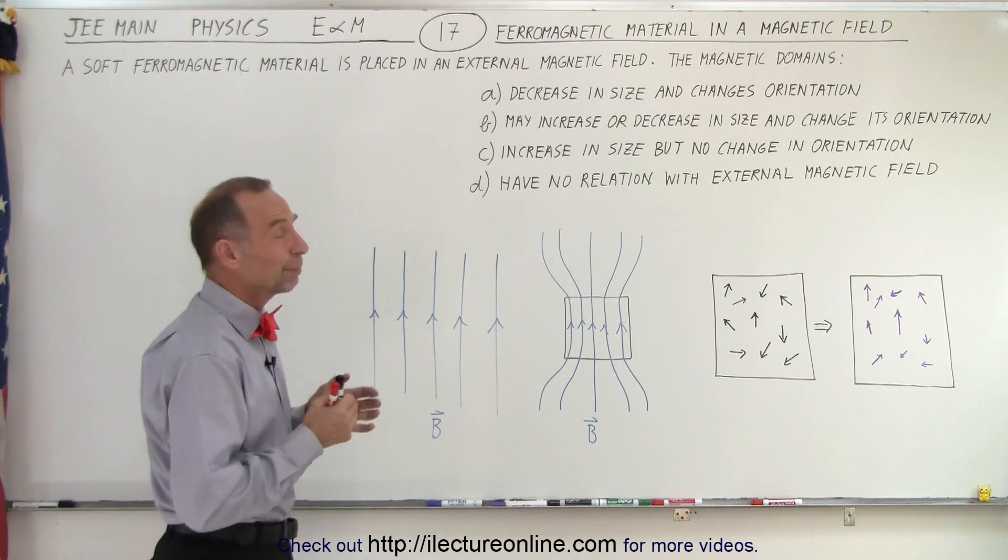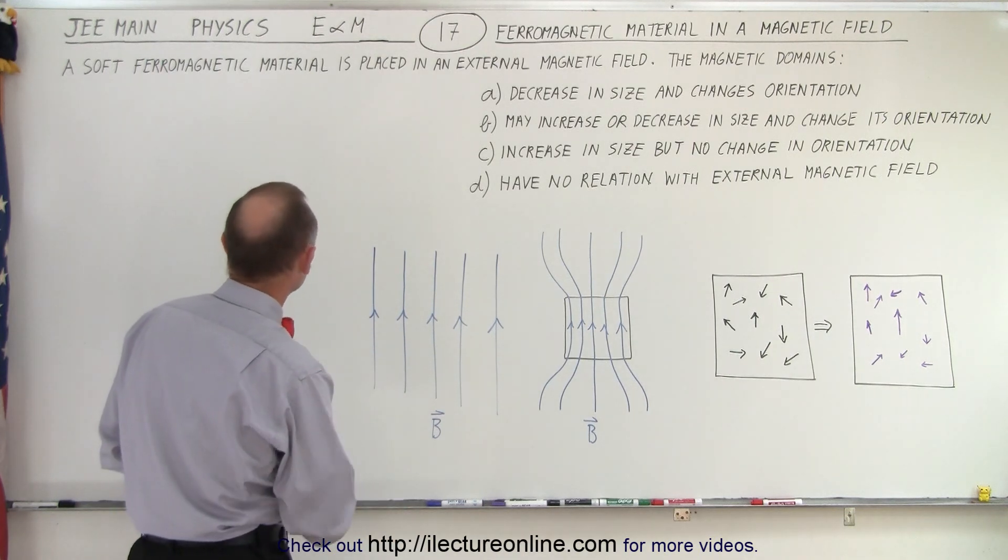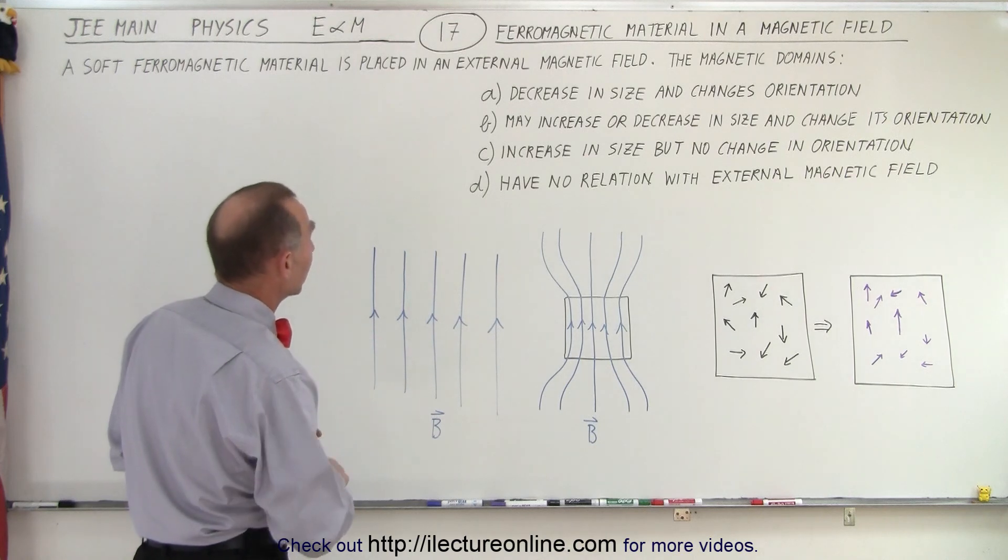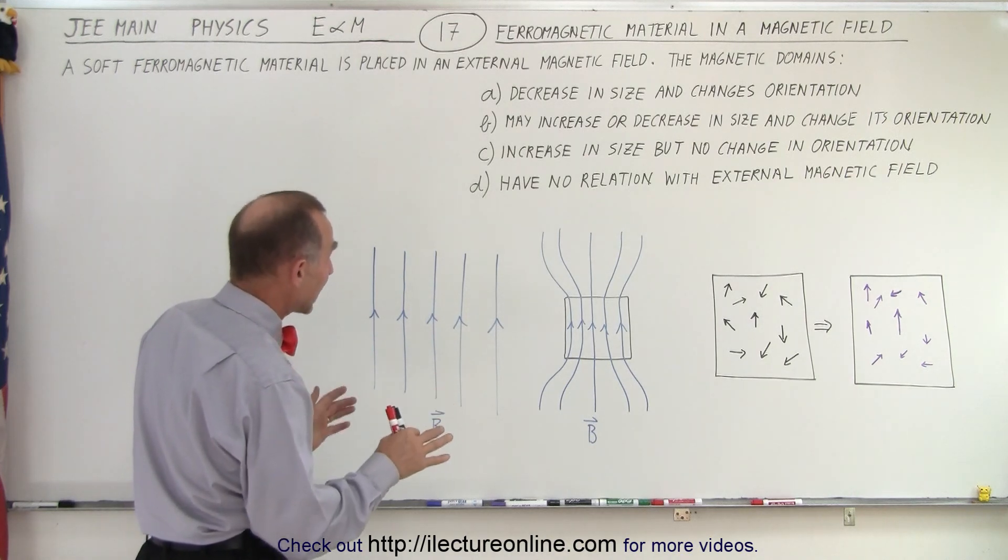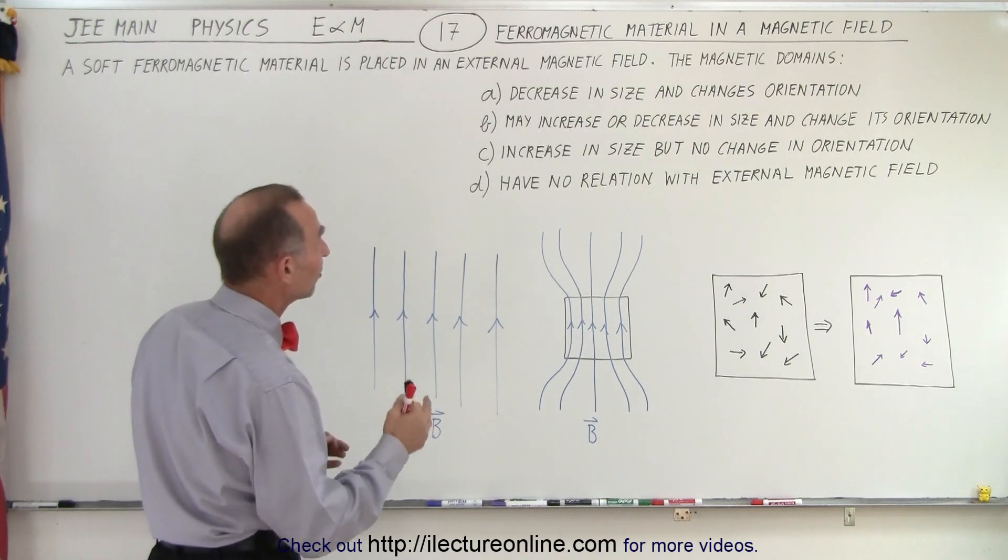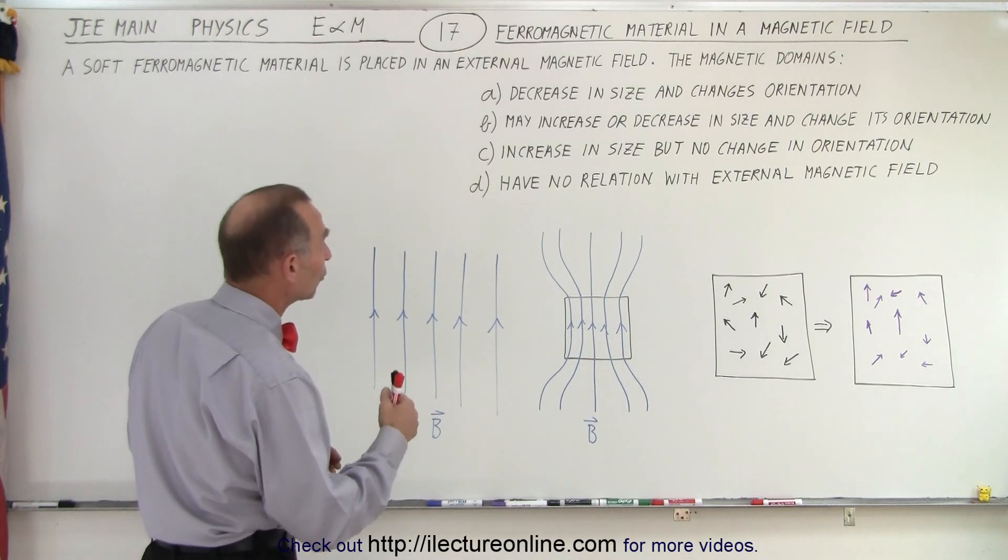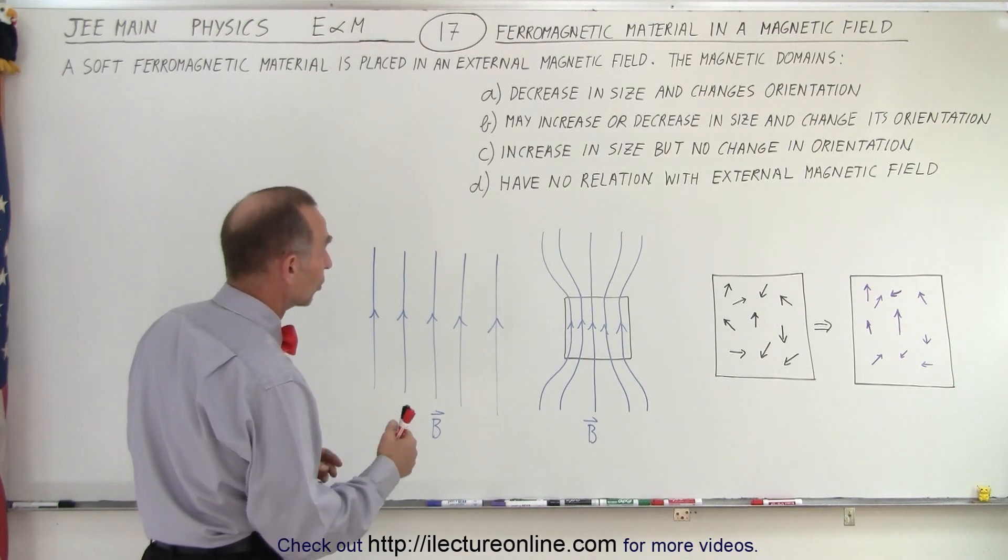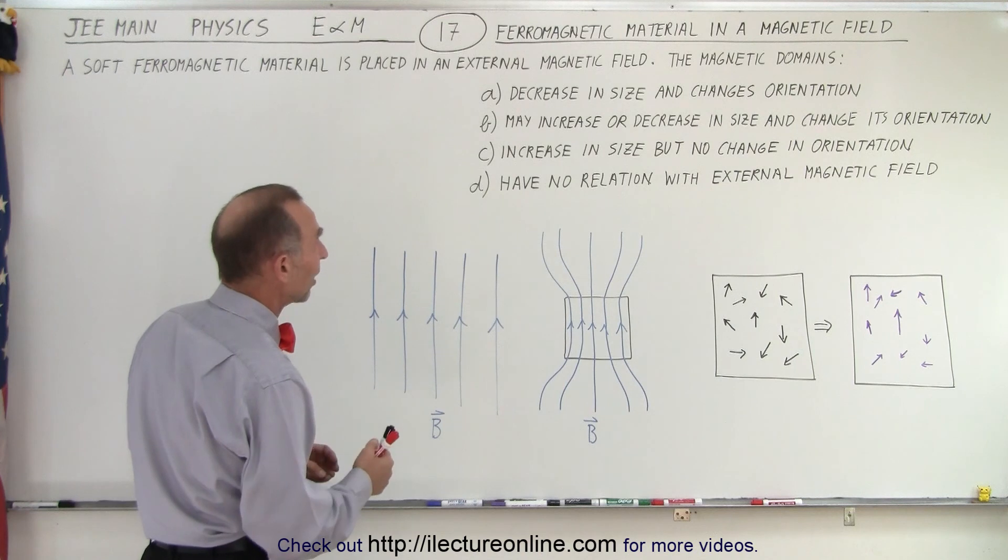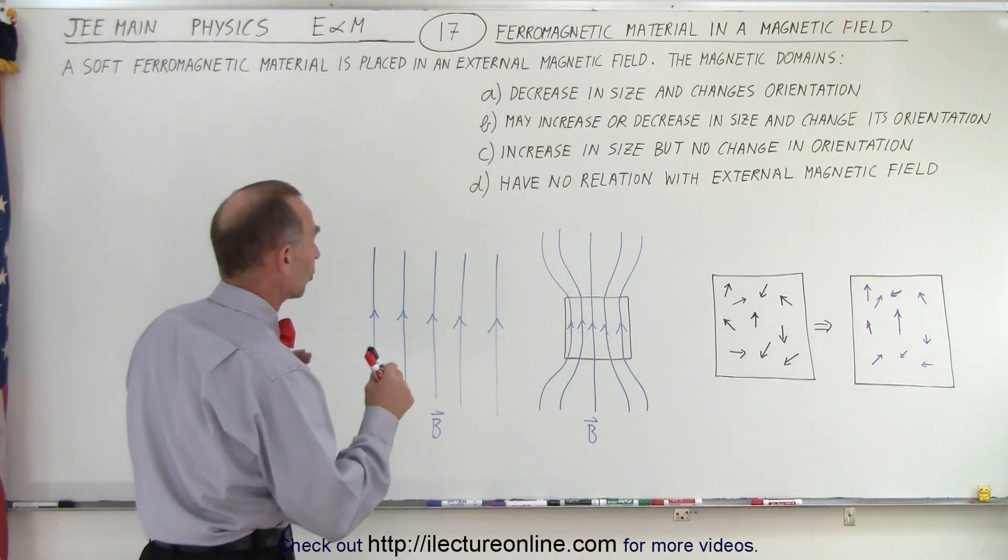The problem deals with ferromagnetic material placed in a magnetic field. A soft ferromagnetic material is placed in an external magnetic field, the magnetic domains - and there's four possible answers: decrease in size and changes orientation; may increase or decrease in size and change its orientation; increase in size but no change in orientation; have no relation with the external magnetic field.